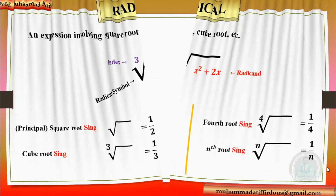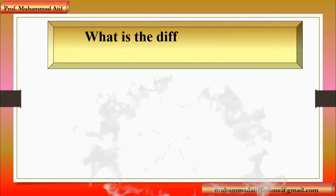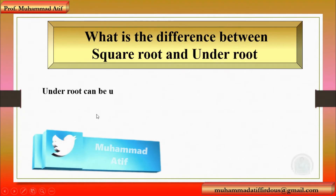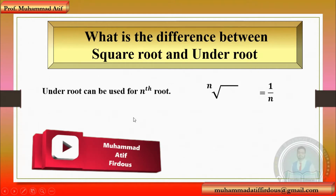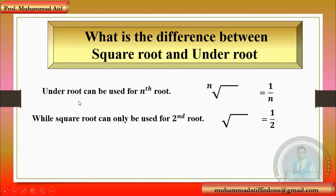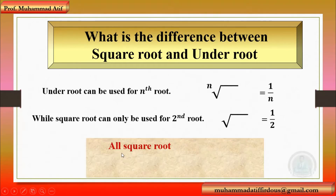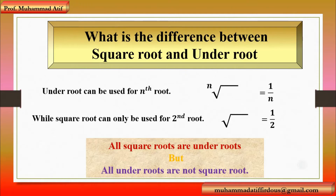Now I am going to discuss the difference between the words square root and under root. Under root can be used for any nth root — meaning if we have index n, its value is 1 over n. But square root can only be used for the second root, so its index is 2 and its value is 1 over 2. A very important note: all square roots are under roots, but all under roots are not square roots. That is the main difference between square root and under root.